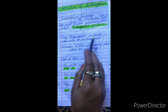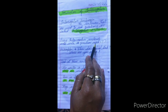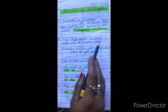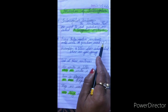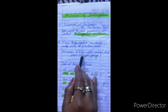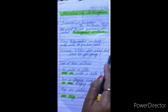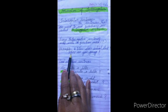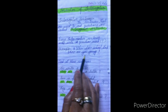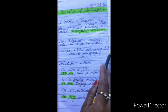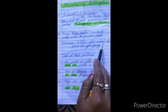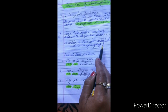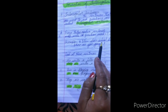Every interrogative sentence ends with a question mark. Yaani har interrogative sentence ke last mein ek question mark hota hai. For example: 'When does school start?' — question mark. Second sentence: 'Where are you going?' — question mark. Aap notice kar sakte hain ki interrogative sentences ke last mein hamesha question mark rakha jaata hai. It is the identification of interrogative sentences — iske through bhi hum pehchaan sakte hain ki koi sentence interrogative hai ya nahi.